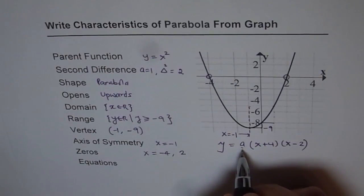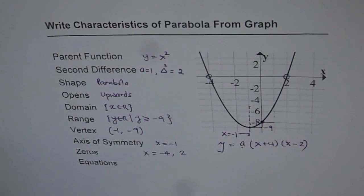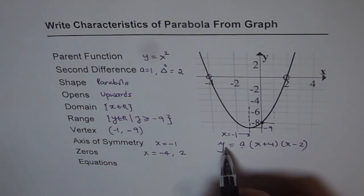To find the value of a, we should actually take some point on the parabola. Let us say the point is at (0, minus 9).